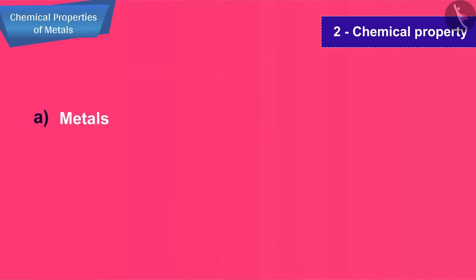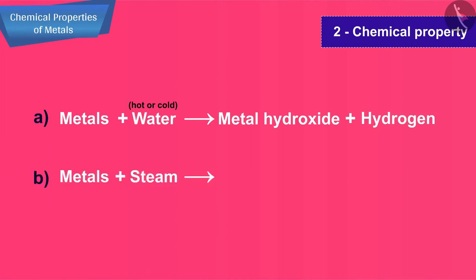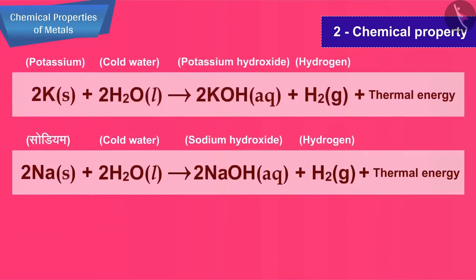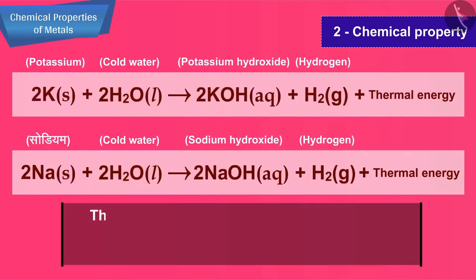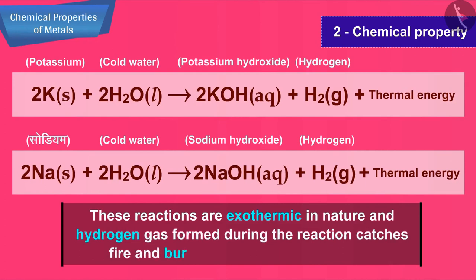When a metal reacts with water, hot or cold, then the products formed are metal hydroxide and hydrogen gas. When a metal reacts with steam, then the products are metal oxide and hydrogen gas. Potassium and sodium react vigorously with cold water. These reactions are exothermic in nature, and hydrogen gas formed during the reaction catches fire and burns, causing little explosions.